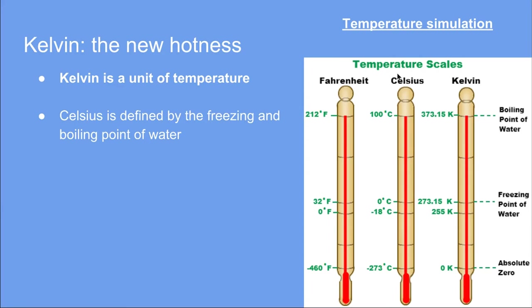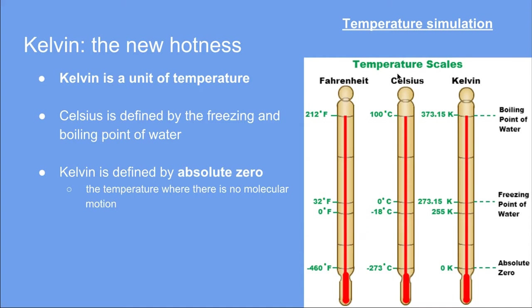The Kelvin is a little bit different, because it doesn't really care about water. What Kelvin is measuring is the temperature from absolute zero. In physics, absolute zero is the temperature when there is no molecular motion in a substance. Remember when we talked about kinetic theory and temperature being the measure of kinetic energy of a substance — when there is absolutely no motion, that is what we measure as absolute zero.